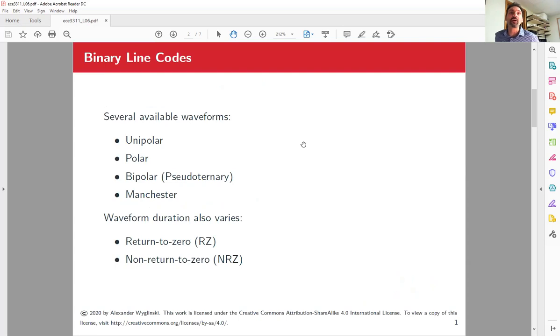So here they are. What you have are things like unipolar waveforms, bipolar waveforms, polar waveforms, and Manchester waveforms. They each have a very particular shape. The unipolar waveform, if you have a 1, you have a non-zero positive voltage level. And if you have a 0, it's a 0 voltage level, just like what we talked about before.